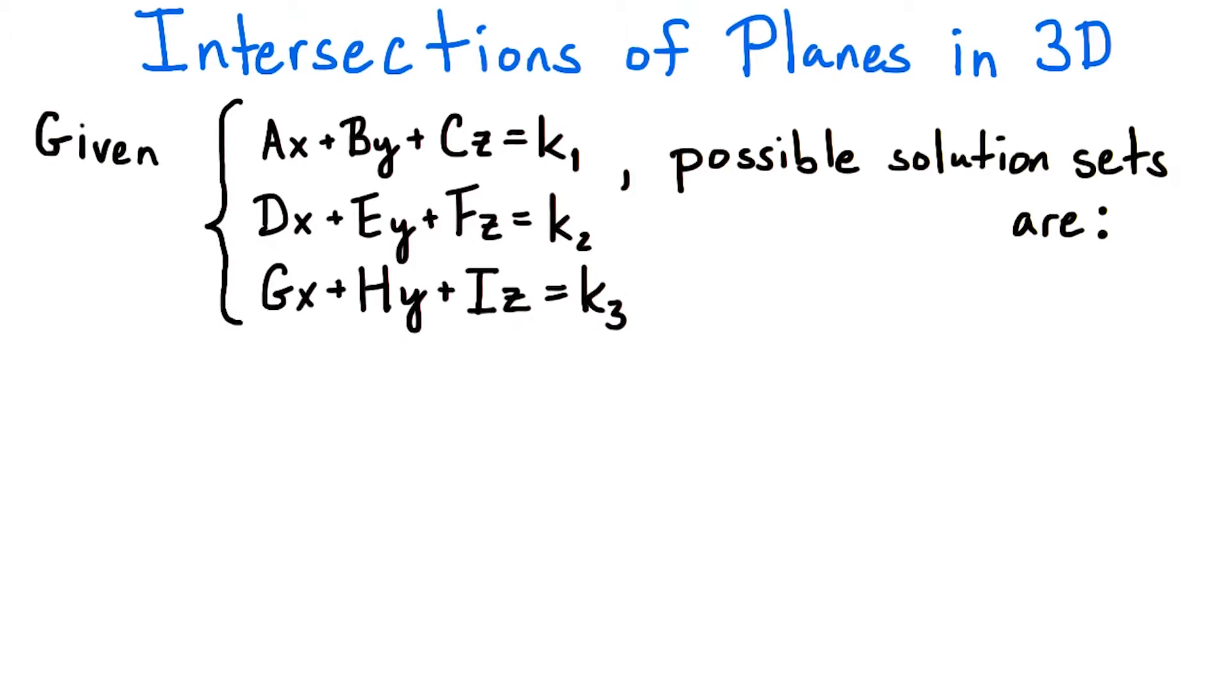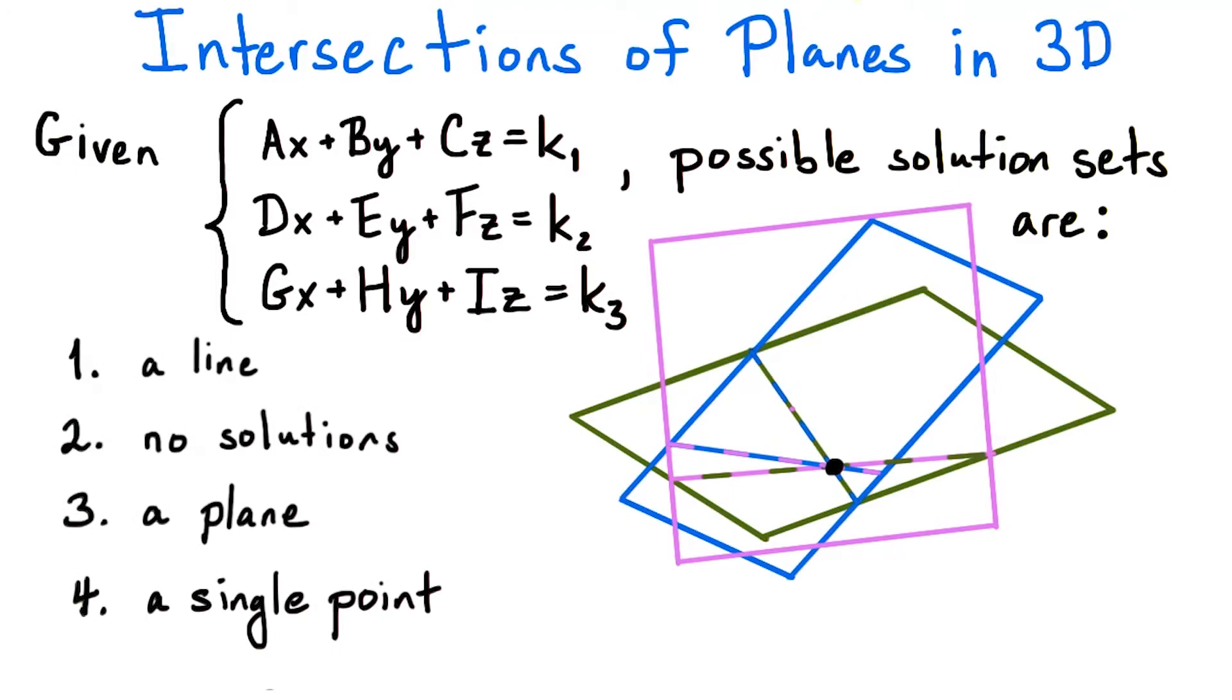However, if we introduce a third equation to our system, then we could have another possibility. The common intersection of the three planes could be a single point, or it could be a line, a plane, or nothing at all.